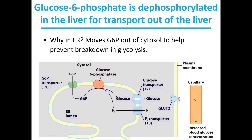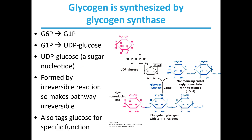In the liver, when glycogen phosphorylase is active — meaning we need to break down glycogen because there's a need for glucose in the blood — the glucose-6-phosphate is going to be transported into the endoplasmic reticulum. There, the phosphate is removed so the glucose can be transported out through normal glucose transporters into the bloodstream. That glucose can then travel through the bloodstream to the areas where it is needed the most.